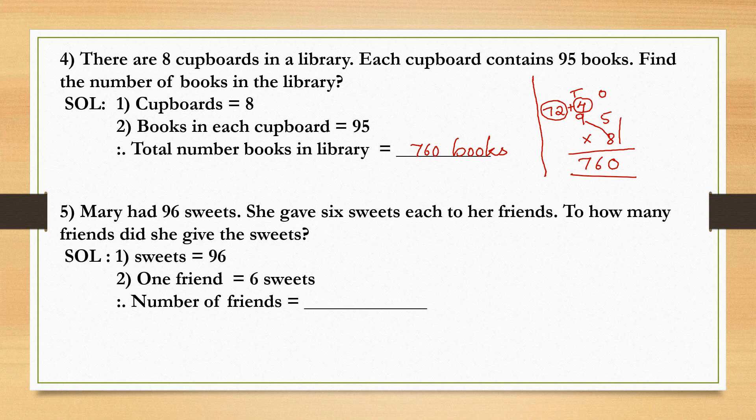Number two: one friend equals six sweets. Therefore, what we should find? Number of friends she distributed.